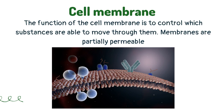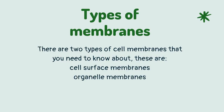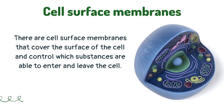The function of the cell membrane is to control which substances are able to move through them. Membranes are partially permeable. There are two types of cell membranes that you need to know about: cell surface membranes, which cover the surface of the cell and control which substances are able to enter and leave the cell.